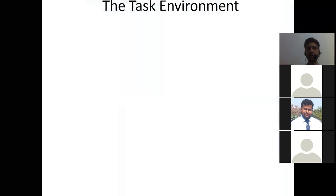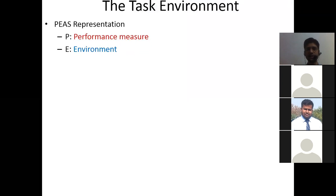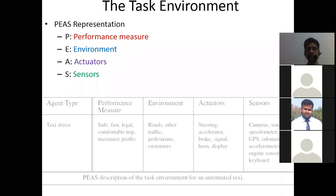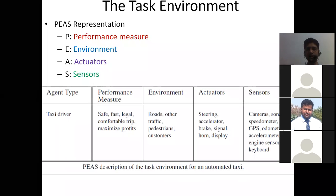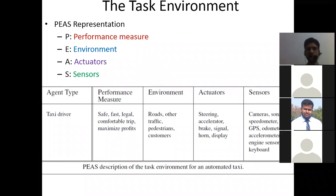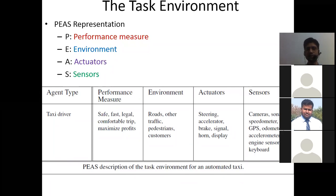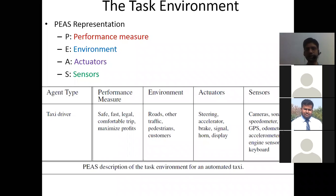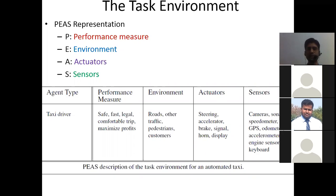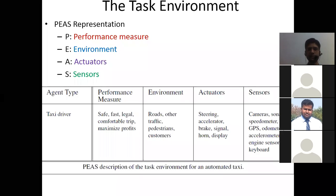The task environment has the PEAS representation: performance measure, environment, actuators, and sensors. There was an example of an automated taxi in which the taxi driver was the agent and the performance measure was a safe, fast, legal, comfortable trip and maximize profit. These are the performance measures on which basis we will decide how well our system is doing correctly.